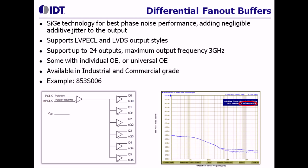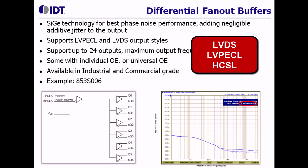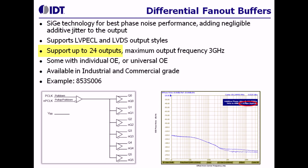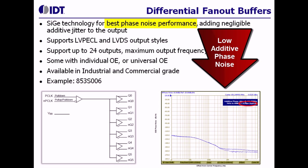The first set of buffers are ones with differential outputs. Differential signals are becoming very popular these days with high-speed applications. Various differential levels such as LVDS, LVPECL, and HCSL are supported by IDT buffers. We offer parts that have up to 24 different outputs and which go up to 3 GHz in speed. These parts are available in both industrial as well as commercial temperature ranges. These parts are designed for very low additive phase noise in mind.